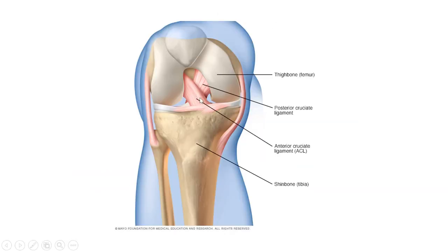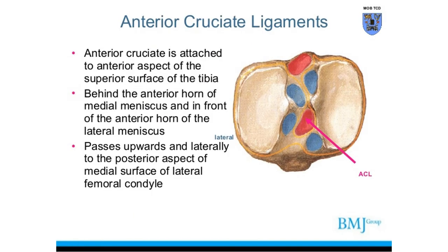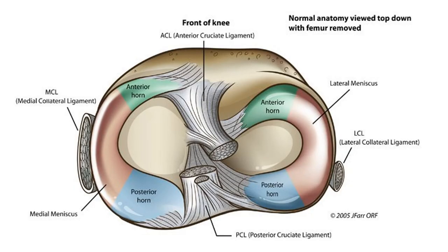To summarize, here we have the anterior cruciate and posterior cruciate ligaments. You can see two menisci and two cruciates — anterior and posterior views, anterior and posterior horns of the medial meniscus, anterior and posterior horns of the lateral meniscus. All these horns attach into the intercondylar area, and here are the anterior and posterior cruciate ligaments.